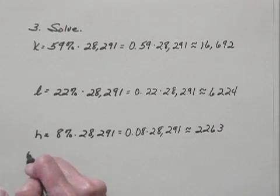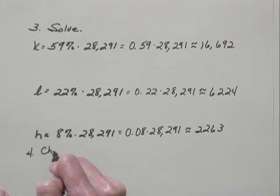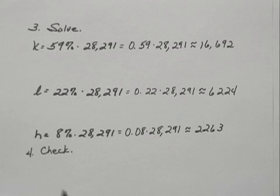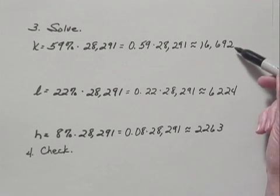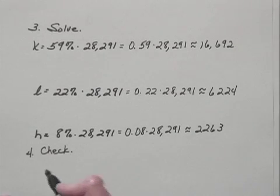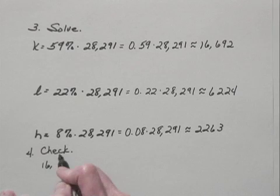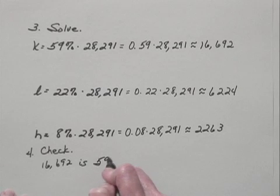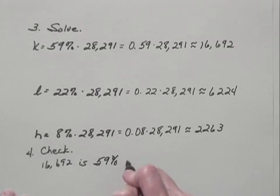Now the fourth step in the process is to check the answers. One way to do this would just be to repeat the multiplications to be sure we hadn't made a mistake in multiplying. Another thing that we could do would be to work backwards. We could start with this number, say 16,692, and we could ask this question: 16,692 is 59% of what number?